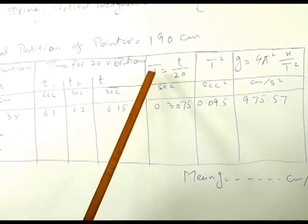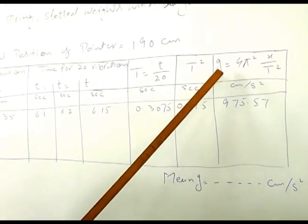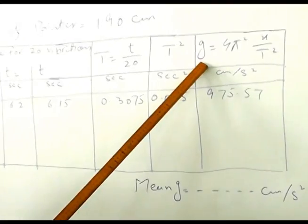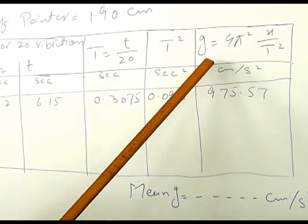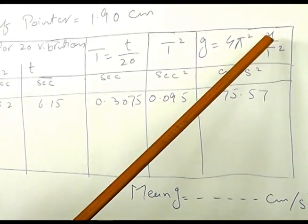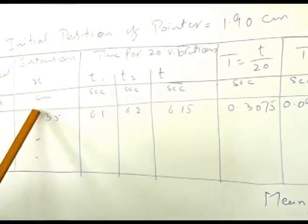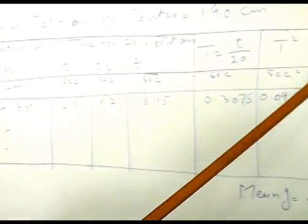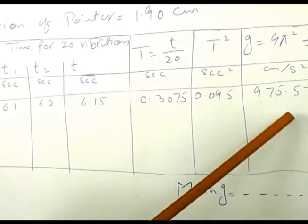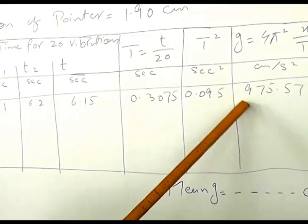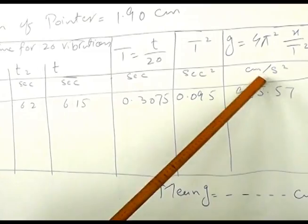We will take the square of this time period. According to our statement of the experiment, we have to calculate the value of g. According to mass oscillation of mass spring system, the formula of gravitational acceleration is g = 4π²x/T². We substitute the value of extension of the spring and time period of the oscillating mass spring system, and calculation will give us the value of gravitational acceleration which is 975.57 centimeter per second squared.